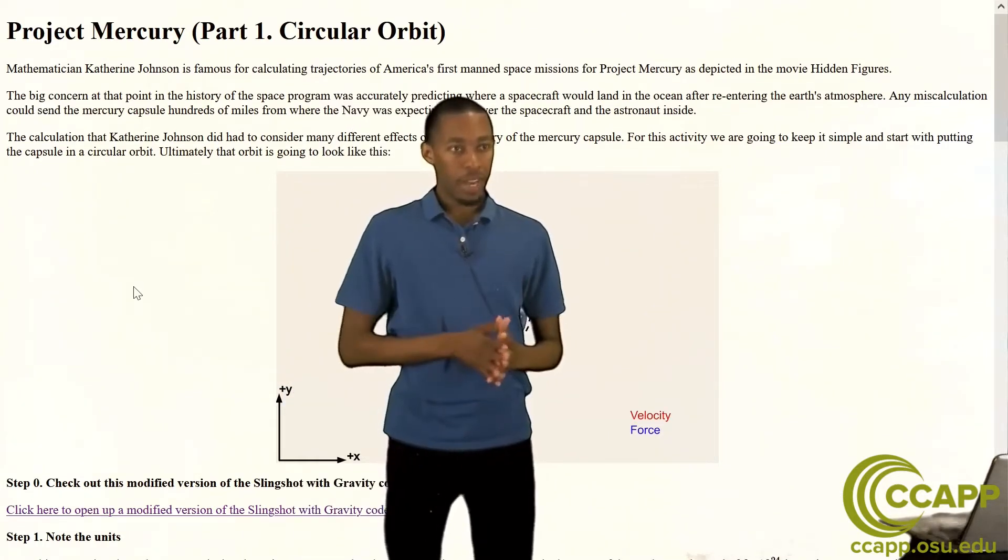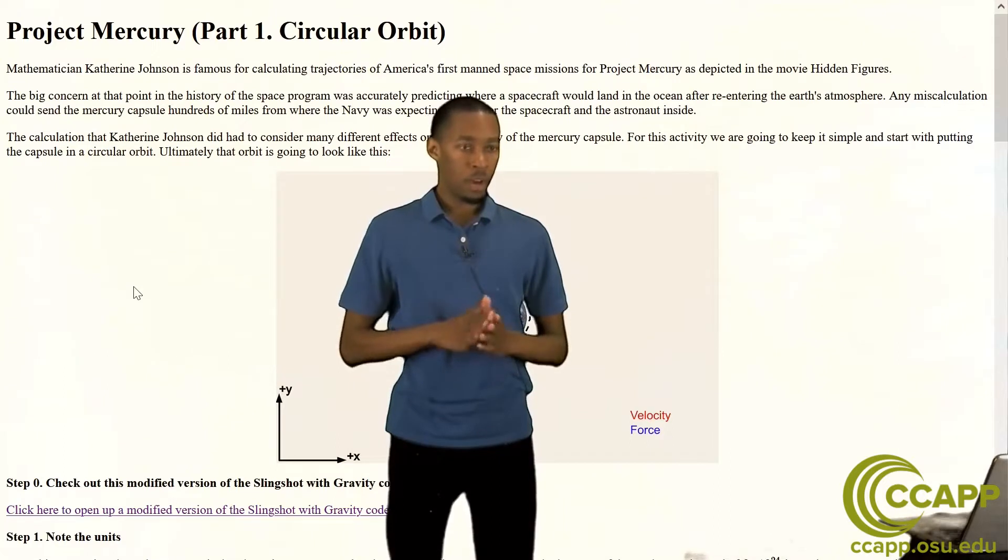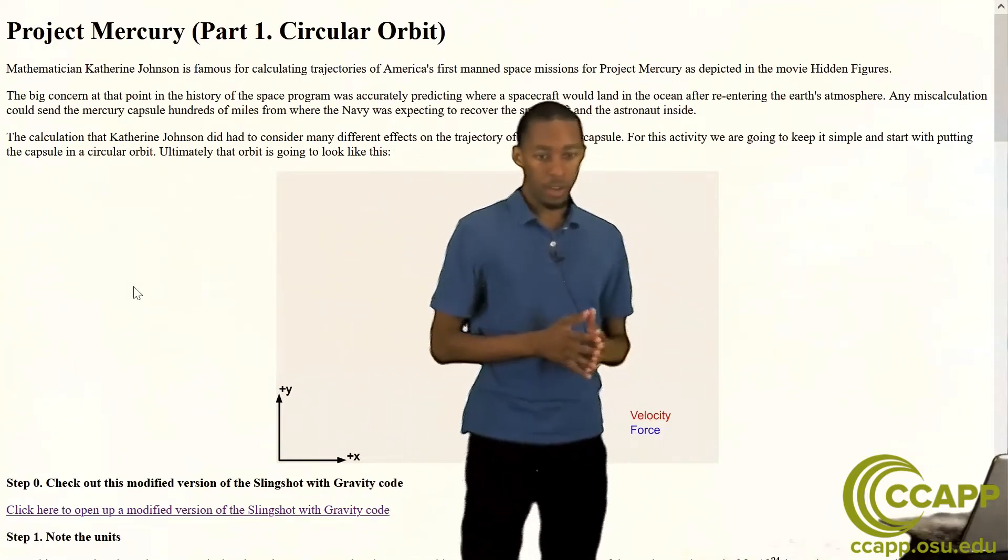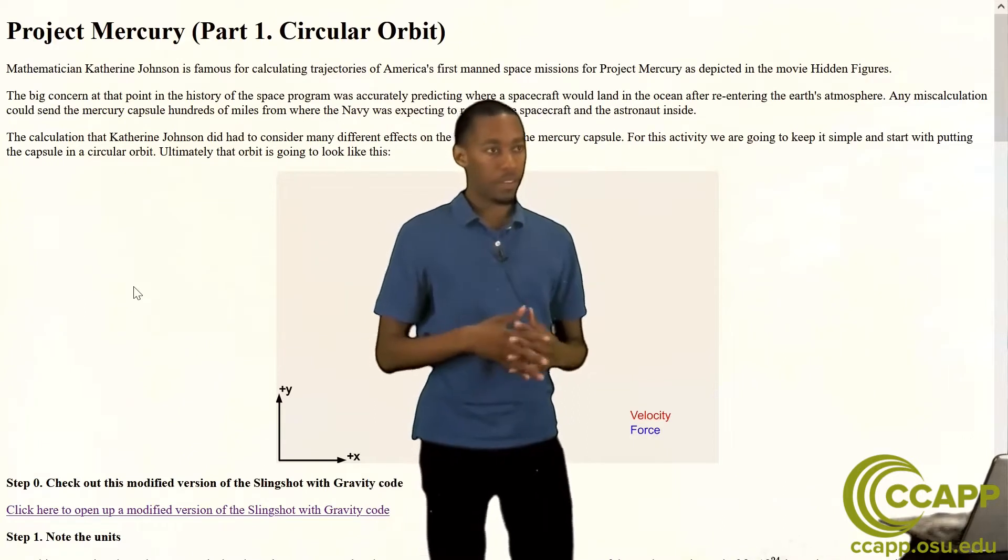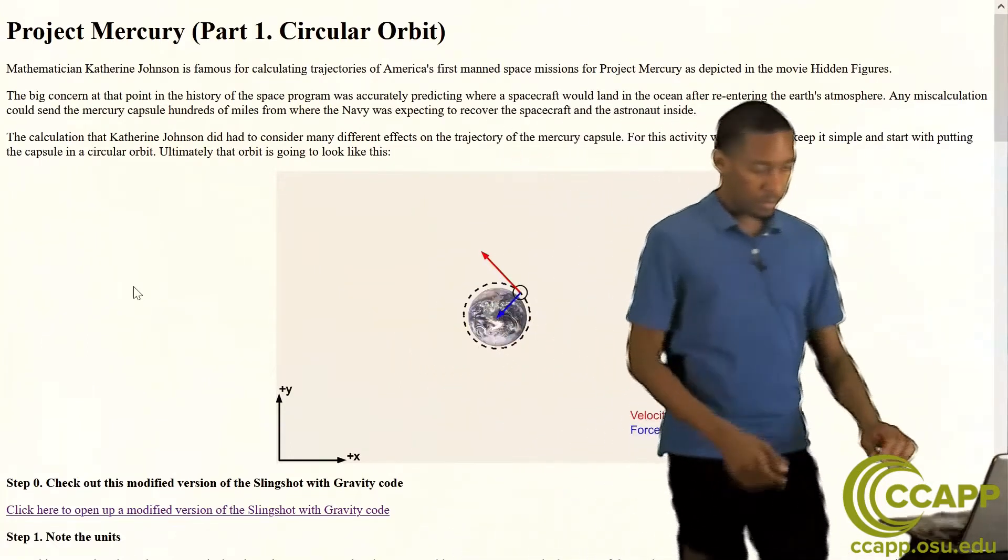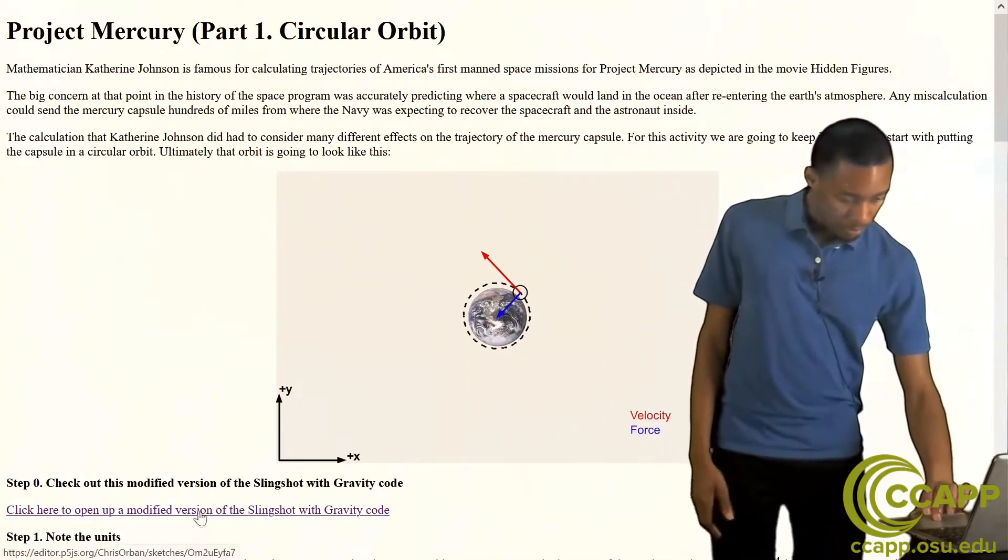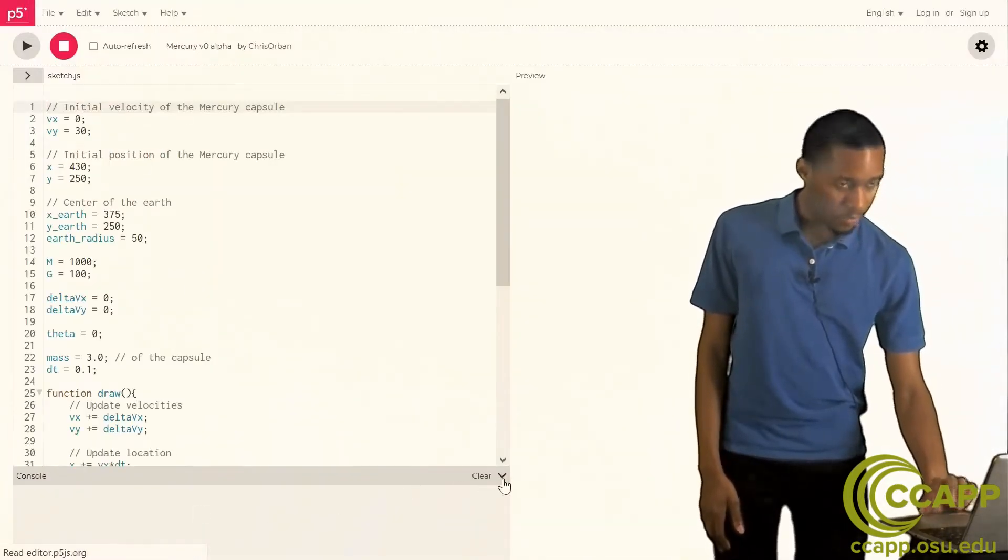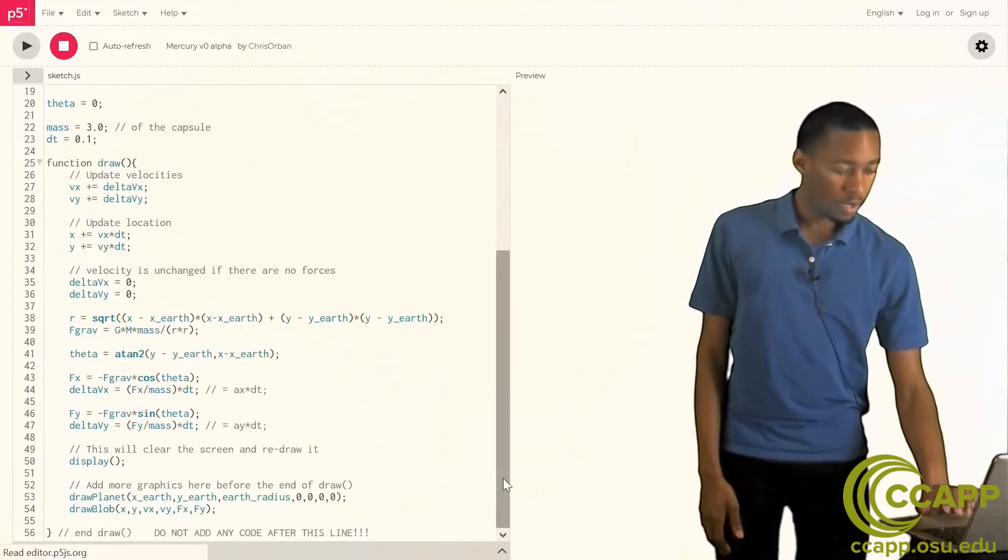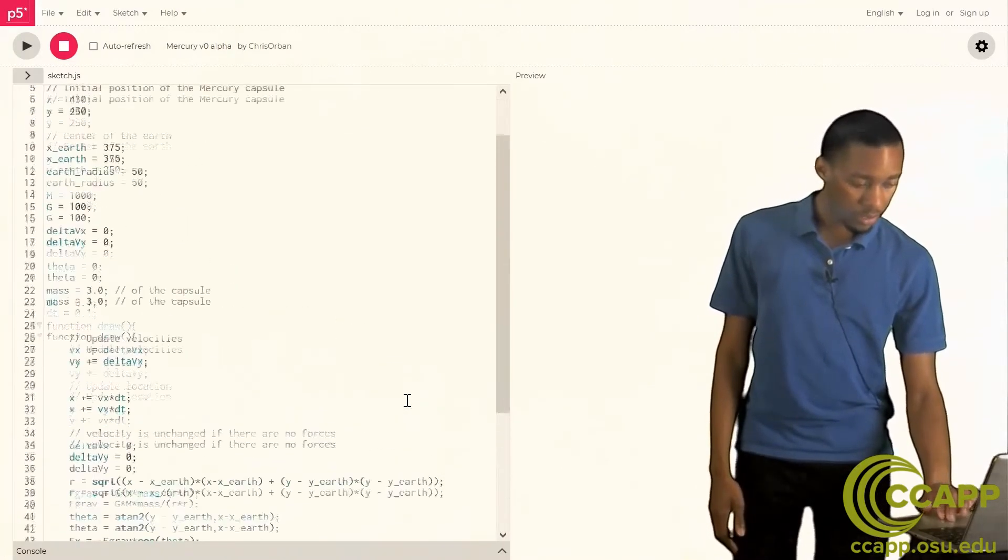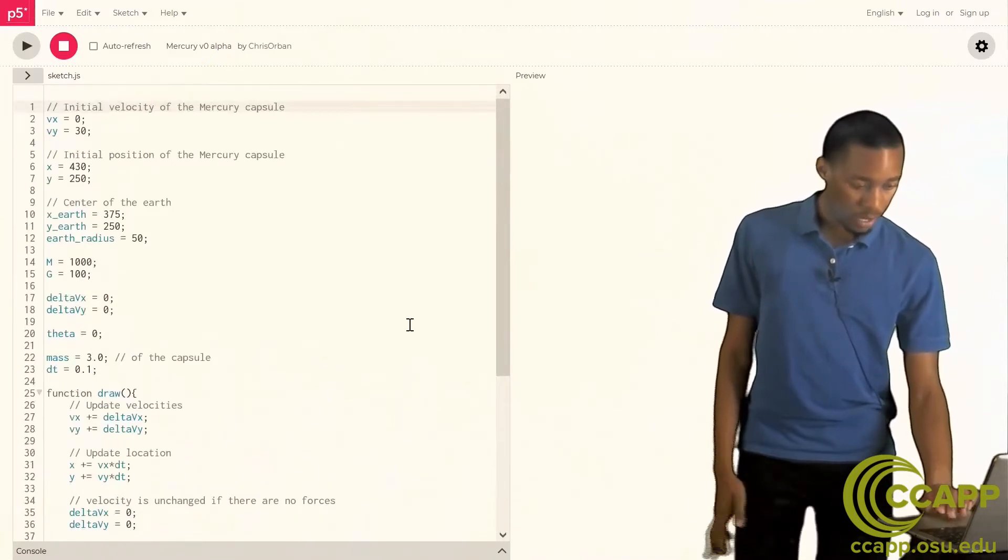In order to look at the kind of mathematics that Katherine Johnson did we're going to start by working with a modified version of our slingshot with gravity code. Many of you might have done this exercise before and if you have you should be pretty familiar with what we're looking at and if you haven't that's fine too. So let's start. Here in step zero we're just going to click here to open the code. I always like to put the console down so we can see more of the screen and have fewer distractions.